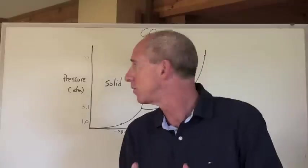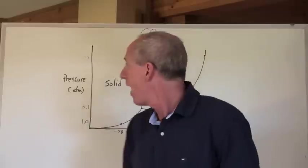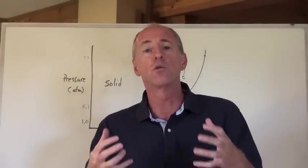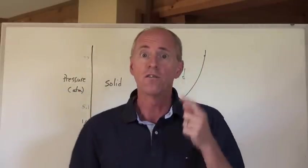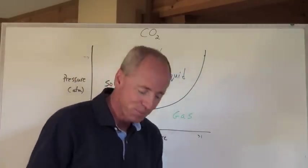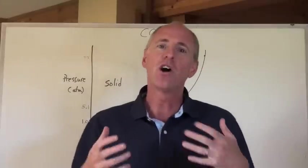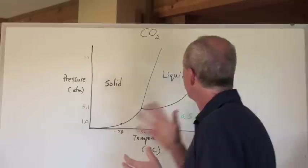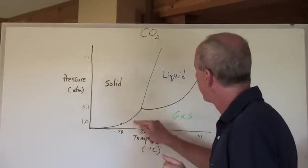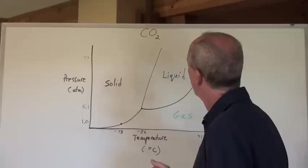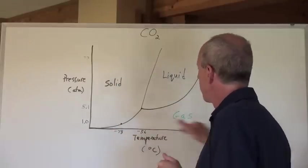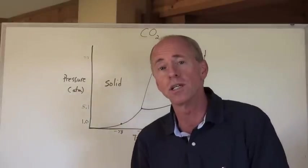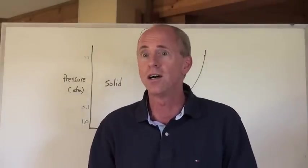We can take a substance like carbon dioxide and see how it responds under various pressures versus changes in temperature. That gives us something called a phase diagram. Phase diagrams have a standard look — you make a little bit of a W shape, then a line going off to the right, with solid, liquid, and gas regions based on pressure and temperature. That describes a phase diagram for virtually every compound found on the planet.